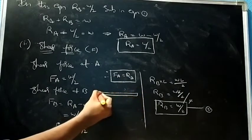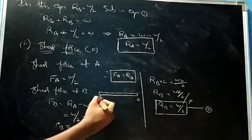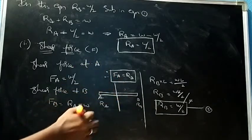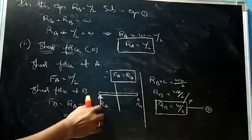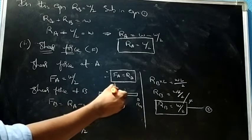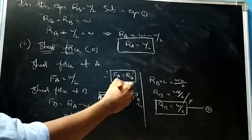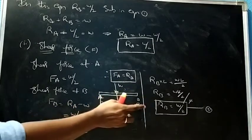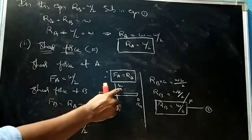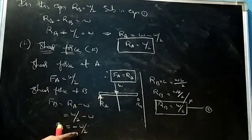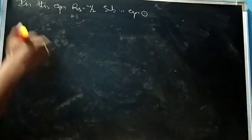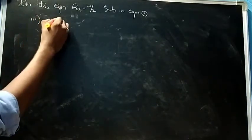Step three: find the bending moment. The beam has Ra at A and Rb at B. Bending moment at A (Ma): taking moments from the right, Rb × L - W × (L/2) = W/2 × L - WL/2 = WL/2 - WL/2 = 0. So Ma = 0.